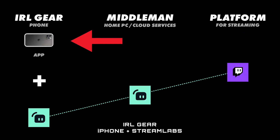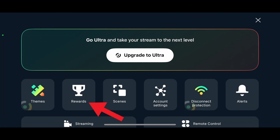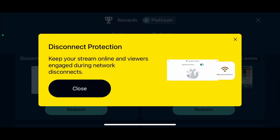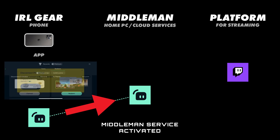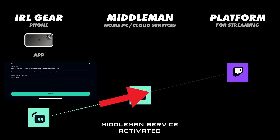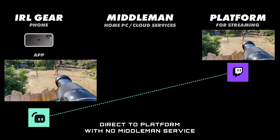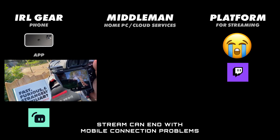In this example, the IRL gear was my phone and the Streamlabs mobile app. In order to use their Disconnect Protection feature for free, I had to redeem it in their app first. This activates a middleman service, which is one of their private servers. When I start broadcasting from my phone, it goes through their private server before reaching the live streaming platform. If I forget to redeem Disconnect Protection, the stream becomes a direct one, so there's no private server — meaning my stream would end whenever there's a problem with my mobile connection.